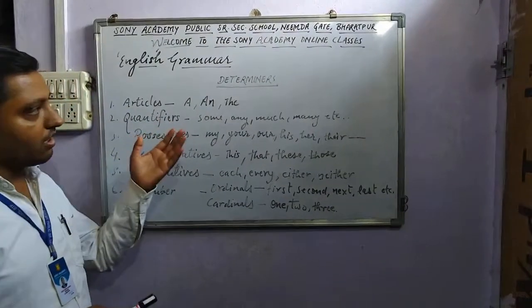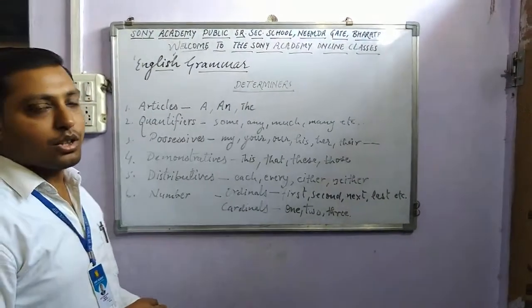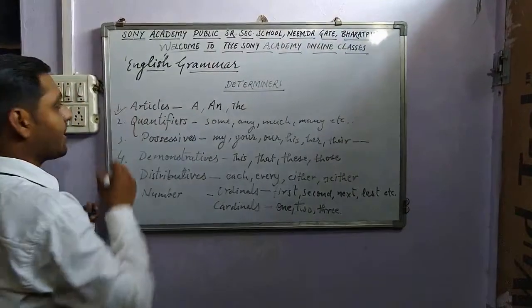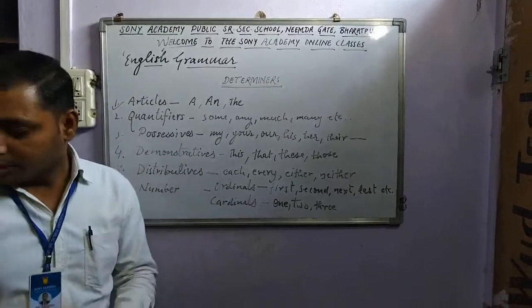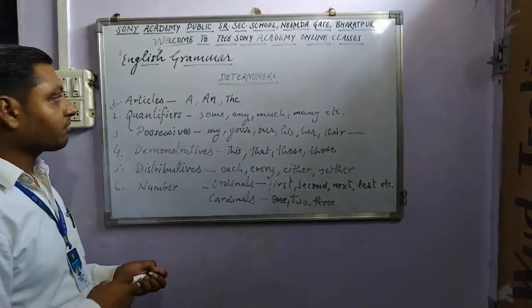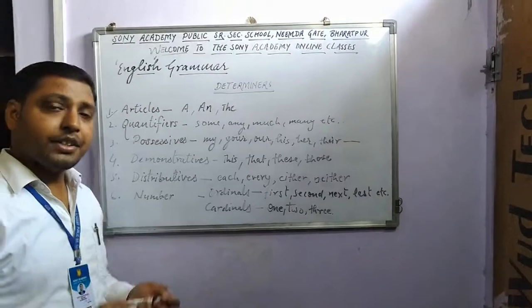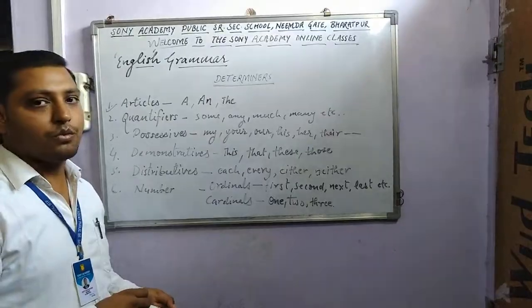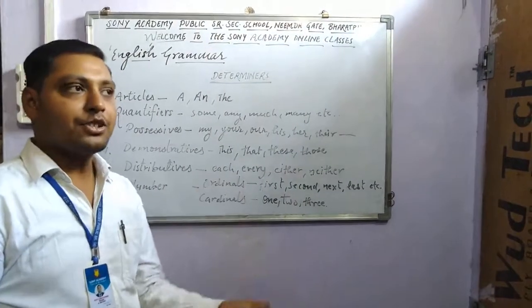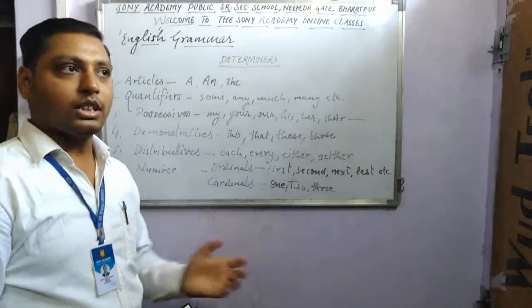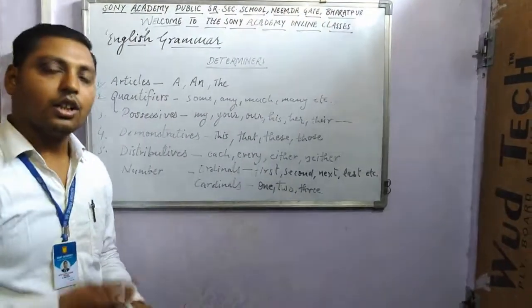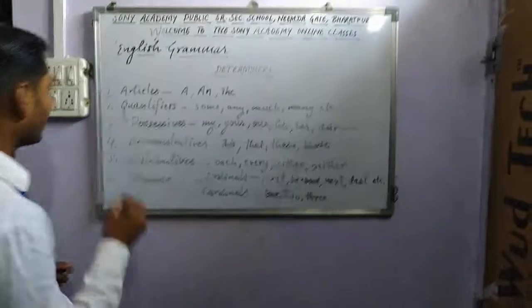So those are the six important divisions of determiners. Now we are going to learn about the first division — articles. Articles are words always used before nouns to tell which noun the speaker is referring to, whether the noun is specific or general. There are two types of articles.